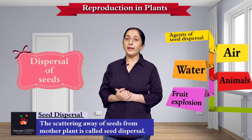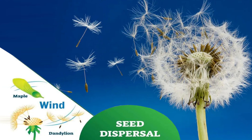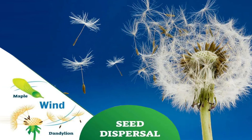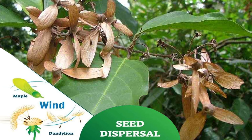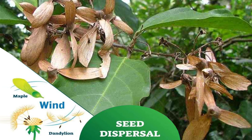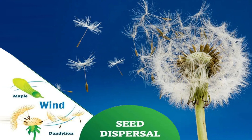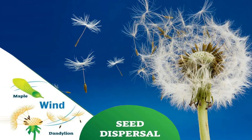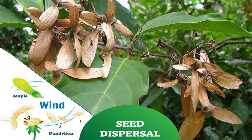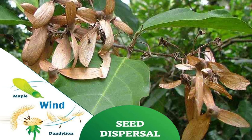First we will discuss dispersal by wind. Light and hairy seeds like cotton, madar, dandelion, and hyptis are carried far away by wind. Some plants have seeds that travel far by wind because their seeds are lightweight or hairy. Due to these hairs, when the wind blows, the seeds fly along with it and fall somewhere else. Wherever they fall, if they get favorable conditions — air, water, and sunlight — they will germinate there and grow into a new plant.